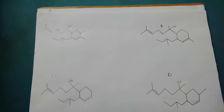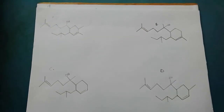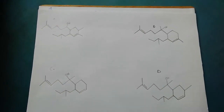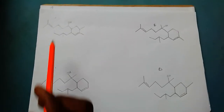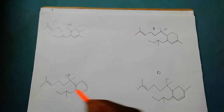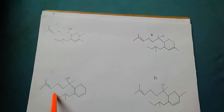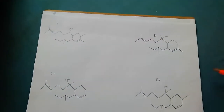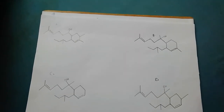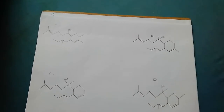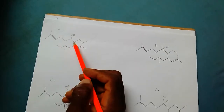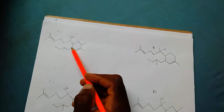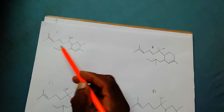Let's take another example. We have these 4 given compounds, very similar, and we are to identify which of them is a terpene. As usual, we have 4 compounds, so the first thing to do is count the number of carbons. If it is a multiple of 5, then it is likely to be a terpene; if it is not a multiple of 5, then it is not a terpene at all. So let's start with compound A: 1, 2, 3, 4, 5, 6, 7, 8, 9, 10, 11, 12, 13, 14, 15, 16, 17, 18, 19, 20. So this one is likely to be a terpene.